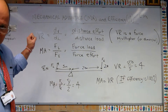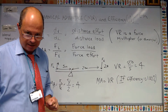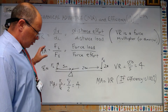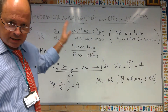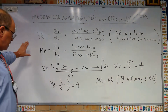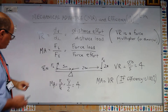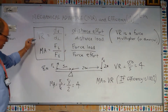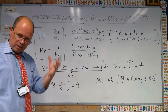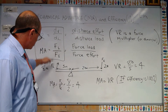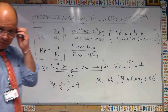Velocity ratio is not going to change if efficiency goes below 100%. But what will change is your mechanical advantage. Whenever efficiency dips below 100%, MA is going to go down while VR stays the same. MA equals force load over force effort — the load force is on top because it's the one that increases.